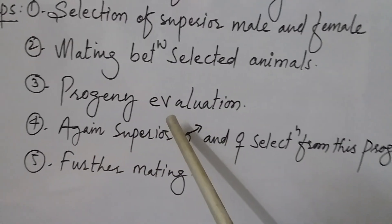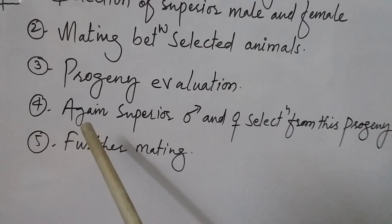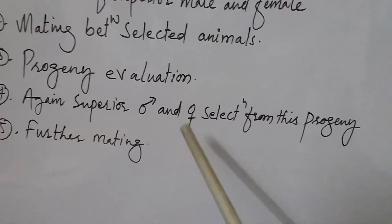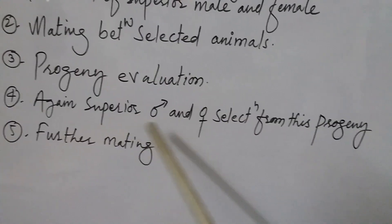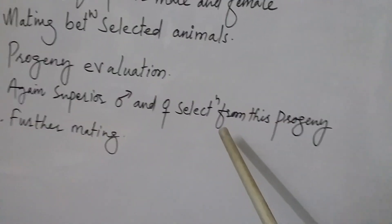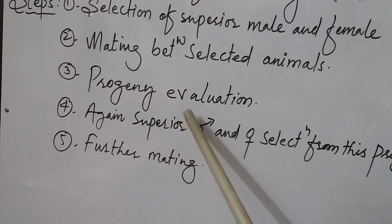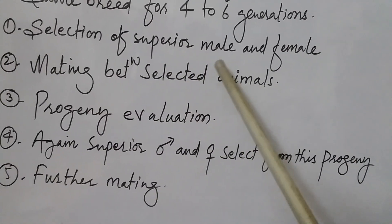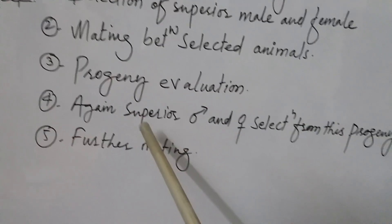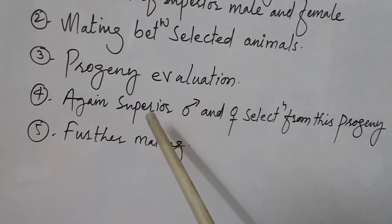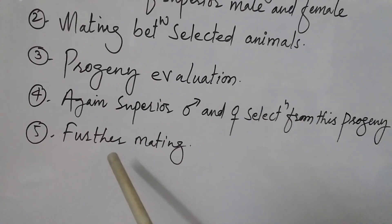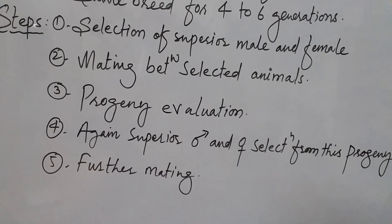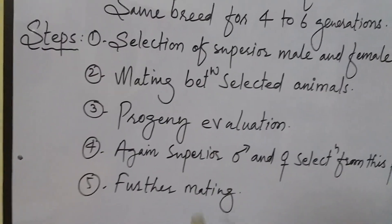After a successful evaluation, you go for the next step, which involves again selecting a superior male and superior female from this progeny. You select from the progeny of the previously mated bull and cow. After that selection, you proceed with further mating between the superior male and female. These are the different steps of inbreeding.